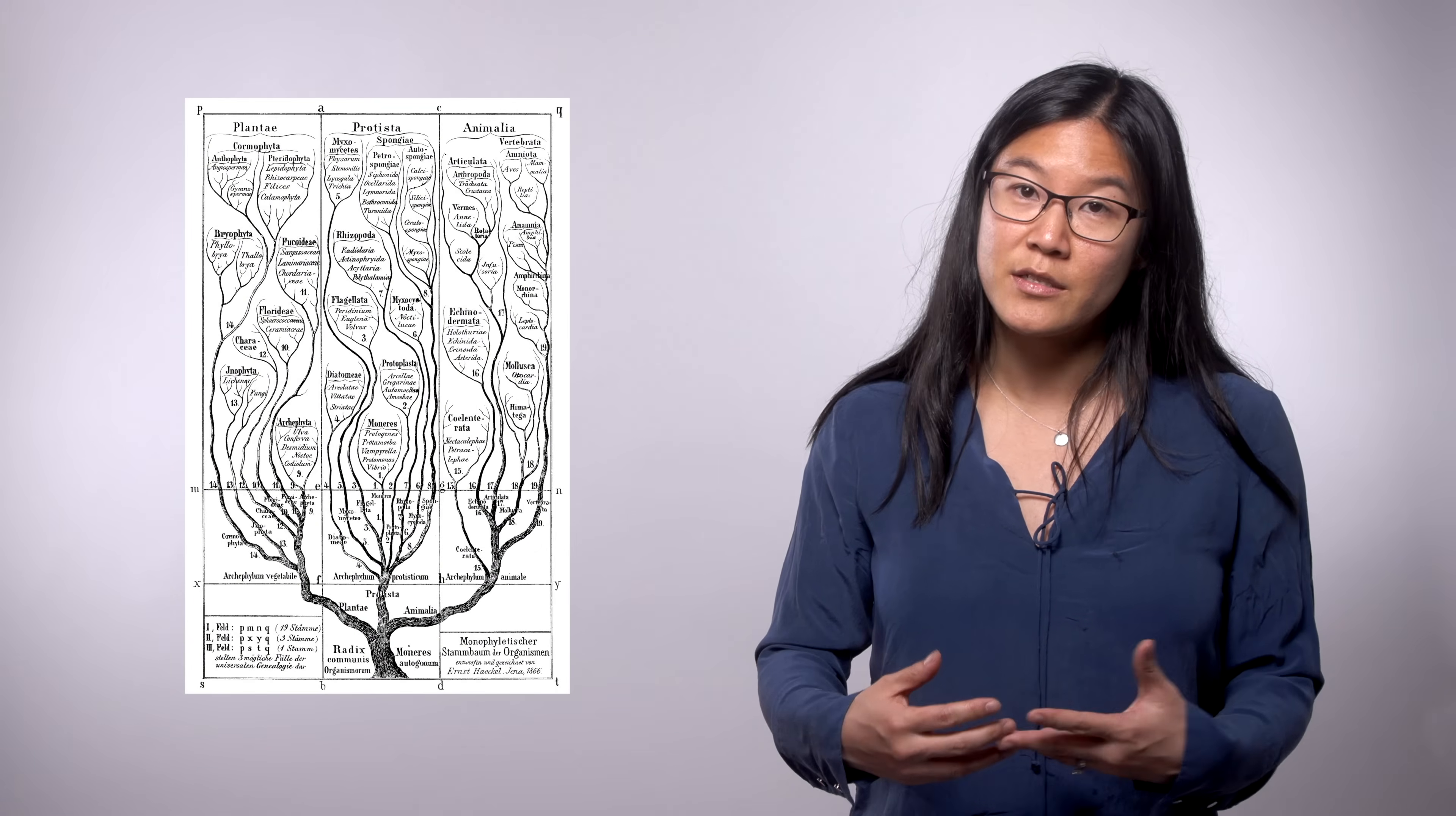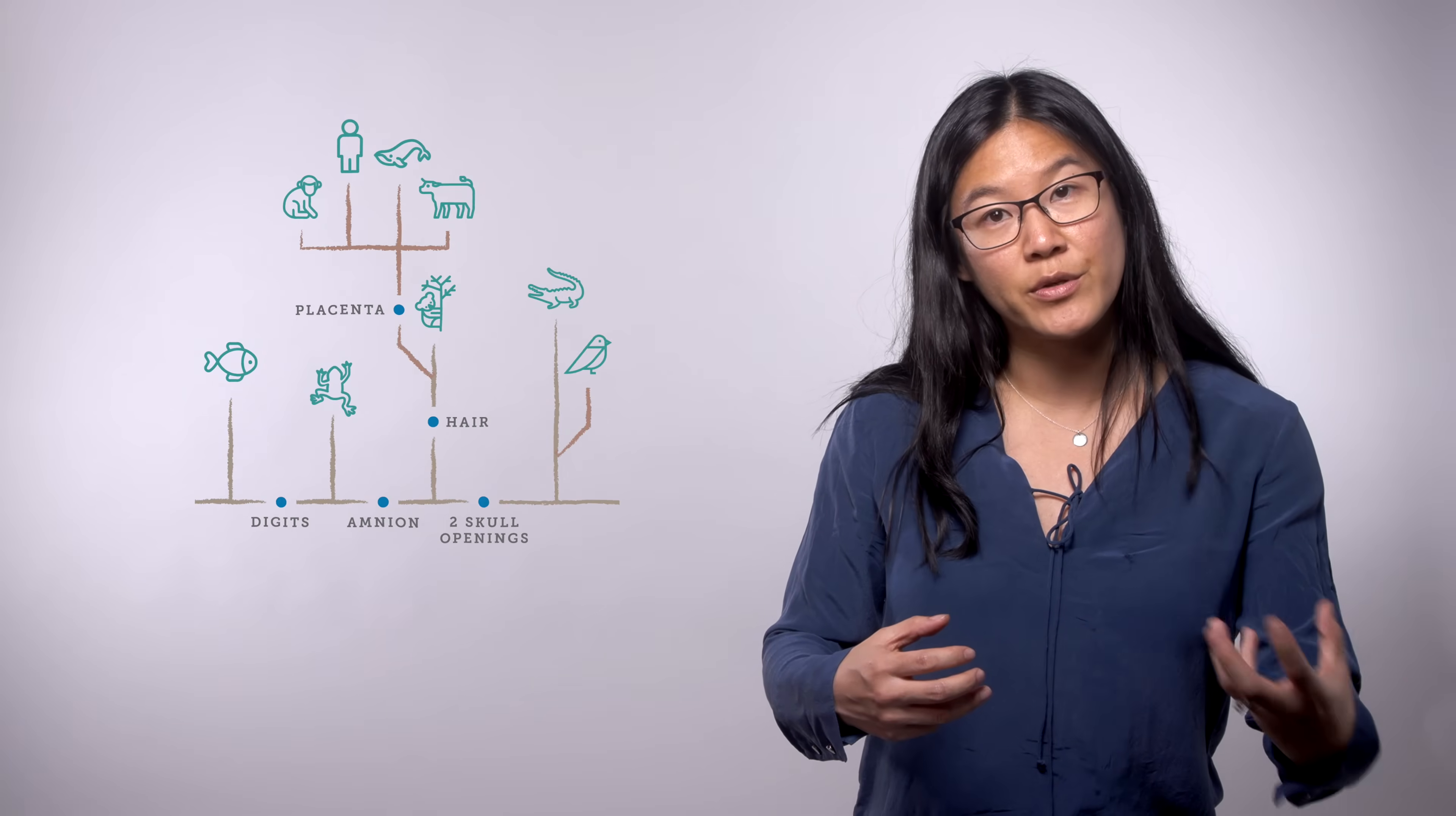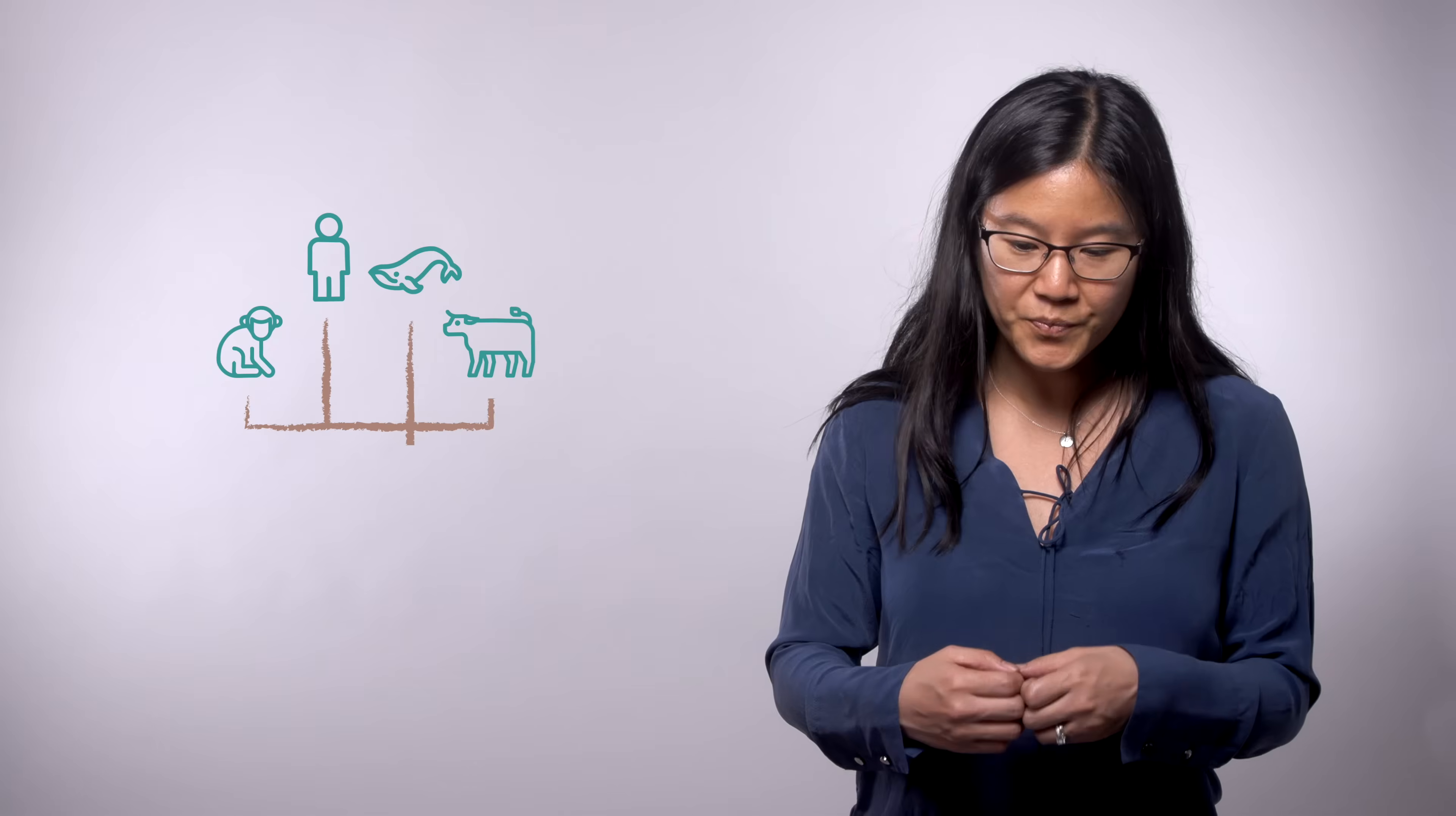Our lineage, the animals, and then the vertebrates, and then the primates nested within them, can be thought of as one set of the terminal branches of that much larger tree. After each split, each branch of the tree grows independently. That means it evolves independently over time because individuals who belong to that branch no longer exchange genes, that is interbreed, with individuals that belong on separate branches.